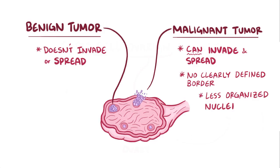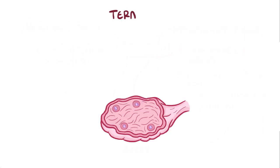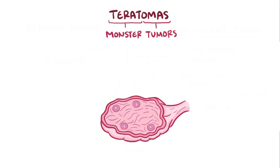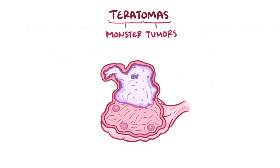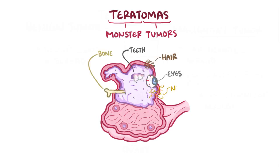There are four types of germ cell tumors, and each type is named after the type of cell that these pluripotent germ cells develop into. The first are teratomas — terato means monster and oma is a tumor. So teratomas are monster tumors, and they're called that because they contain all different types of tissues, including hair, eyes, teeth, bone, and neurons — kind of like a Frankenstein that's got bits of this and that stitched together.